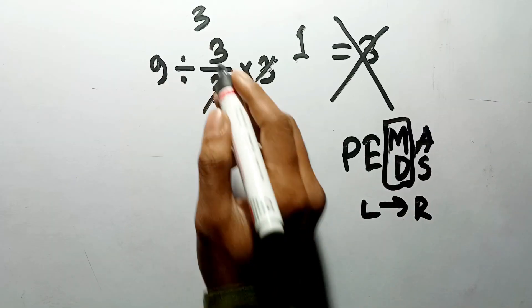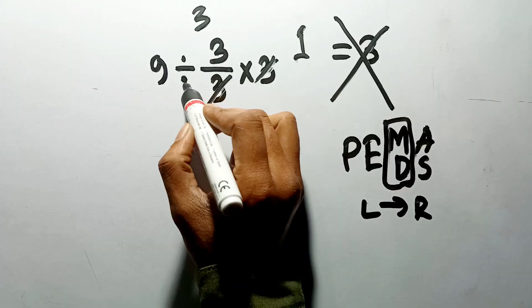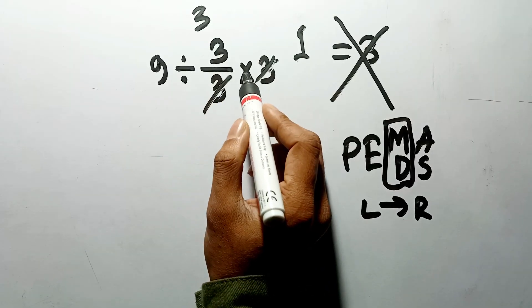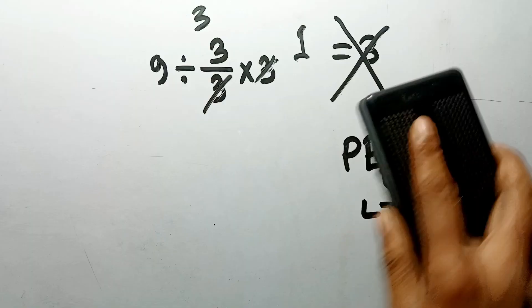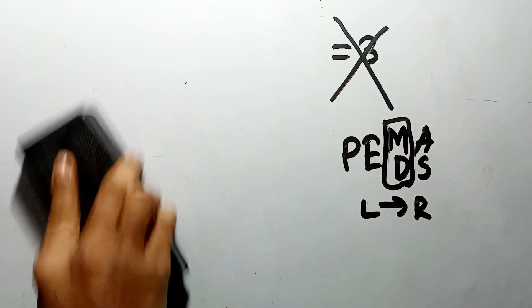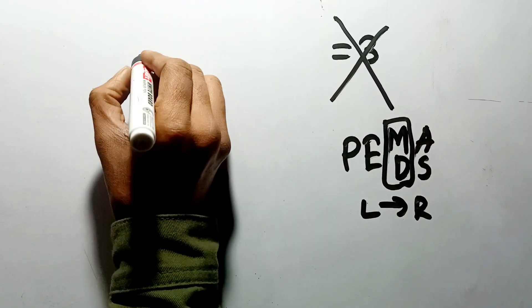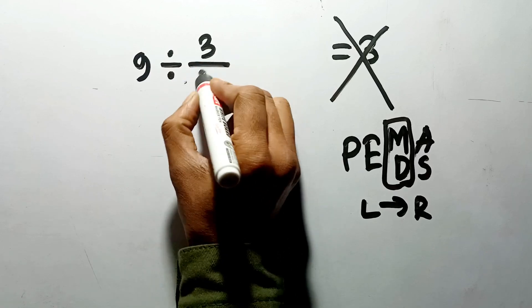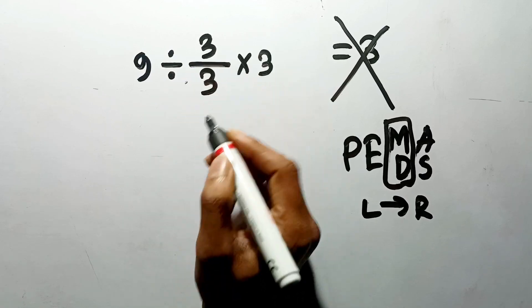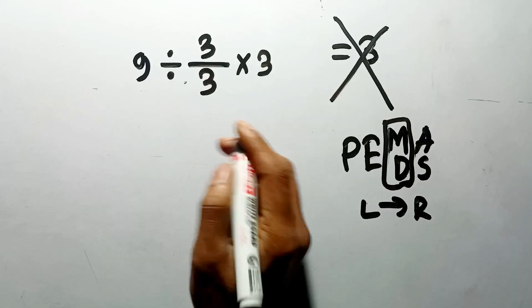In this expression, we have one standard division symbol, one multiplication, and one fraction bar. This fraction bar is the key, because in mathematics, a fraction bar acts exactly like a parentheses, meaning it groups the numbers together, essentially locking them in place until you solve them.